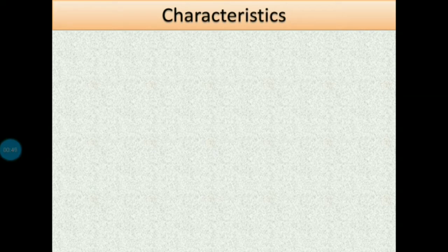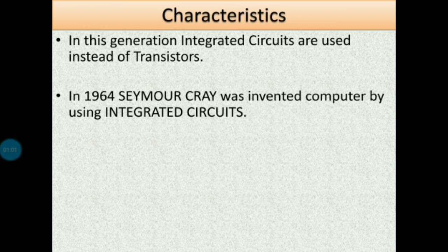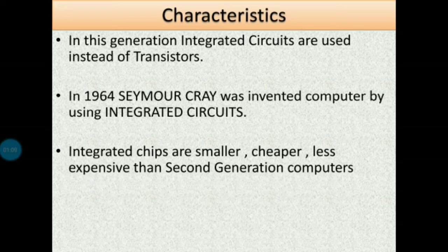Coming to characteristics — what are the characteristics of third generation computers? In first generation, vacuum tubes were used; in second generation, transistors were used; in third generation, integrated circuits were used. In 1964, Seymour Cray invented the computer using integrated circuits. Integrated circuits were very smaller, cheaper, and faster than second generation computers.